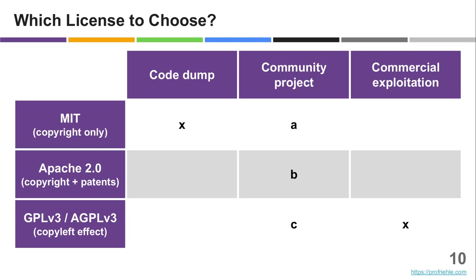You can also use a copyleft license for a community project, because it keeps companies away who might want to commercialize it. You're getting both good and bad: you are preventing commercialization, which rubs some people the wrong way, but you're also not getting any benefit — like bug reports or contributions back — from companies using the software. Any of these three choices is possible for a community open source project.